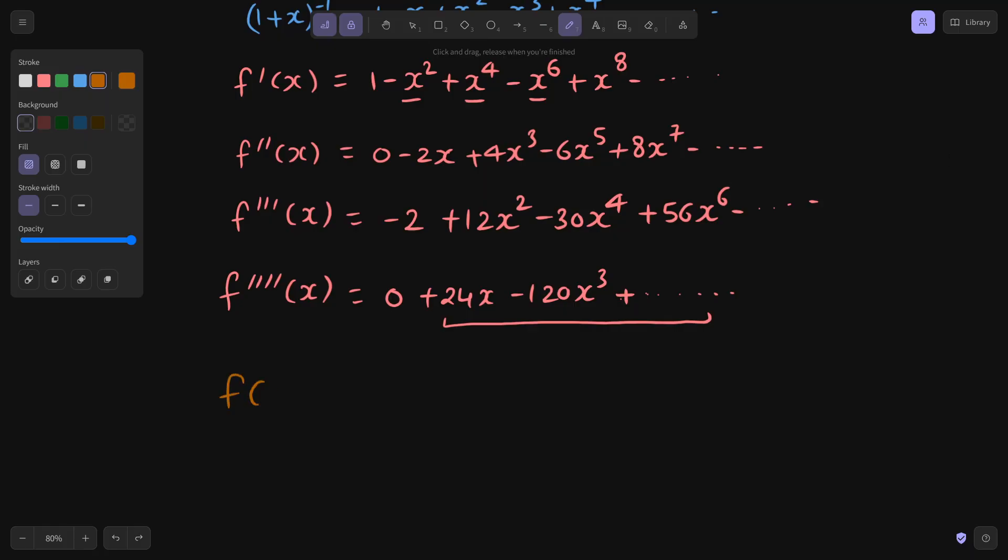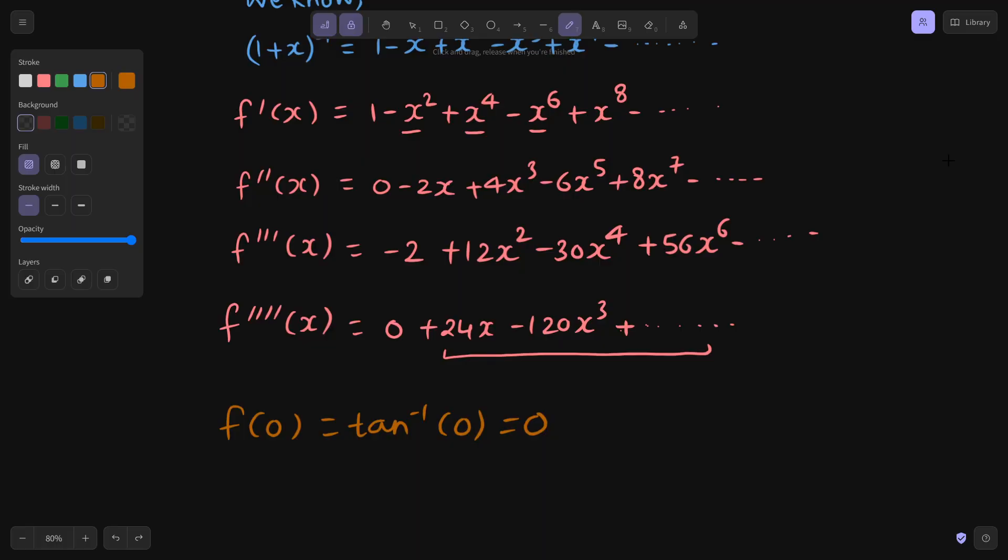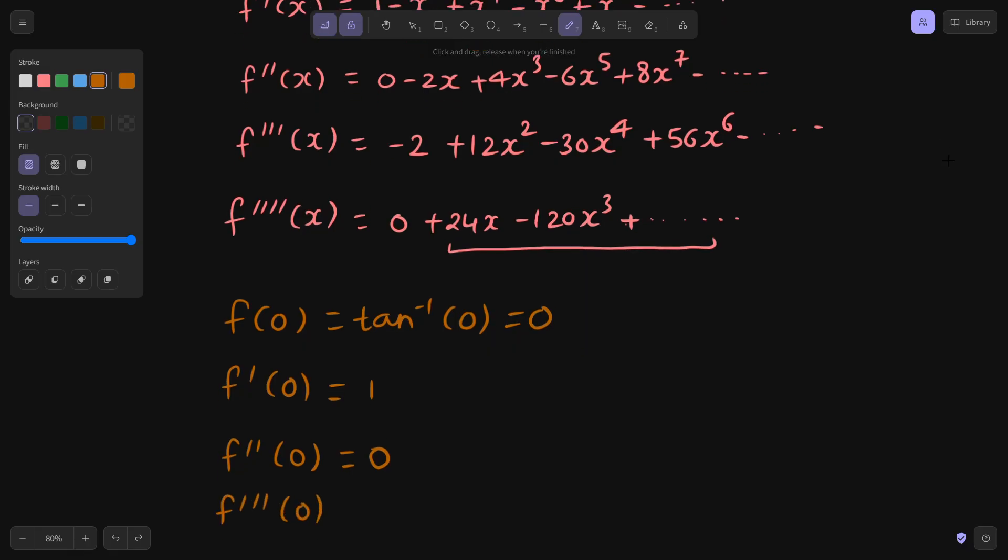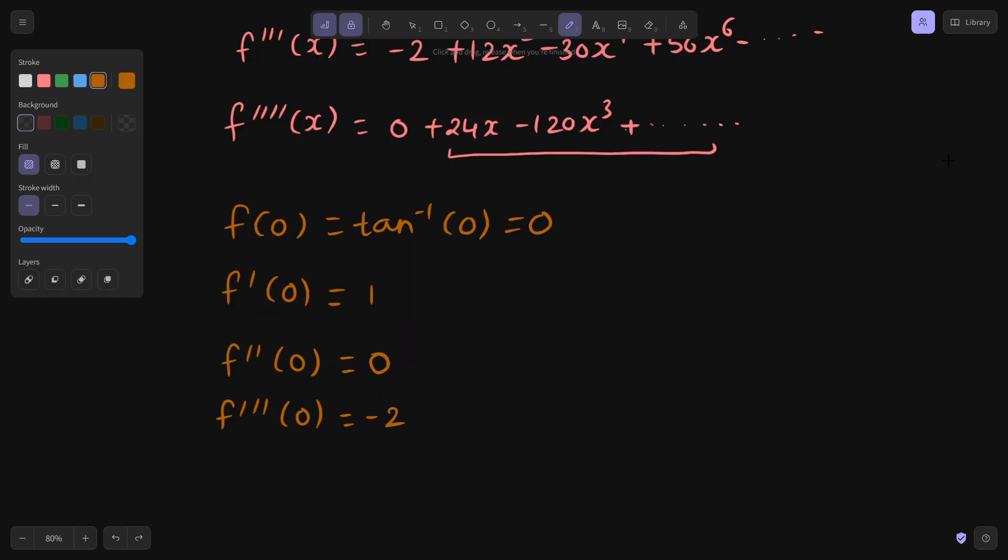Now next we are going to find the first derivative value at 0. So first derivative value at 0, wherever you have x that will become 0, only you will get 1. Next up, we will find the second derivative value at 0 and that as you can see is going to come as 0. Third derivative value at 0 that will come out to be -2 and fourth derivative value at 0 that is going to come as 0. Looks like I am interested in some more terms because only two terms I have got which is non-zero. Because fourth derivative at 0 is also 0.